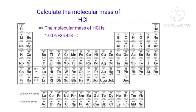So the molecular mass of HCl is 1.0079 plus 35.453, which is equal to 36.4609 grams per mole.